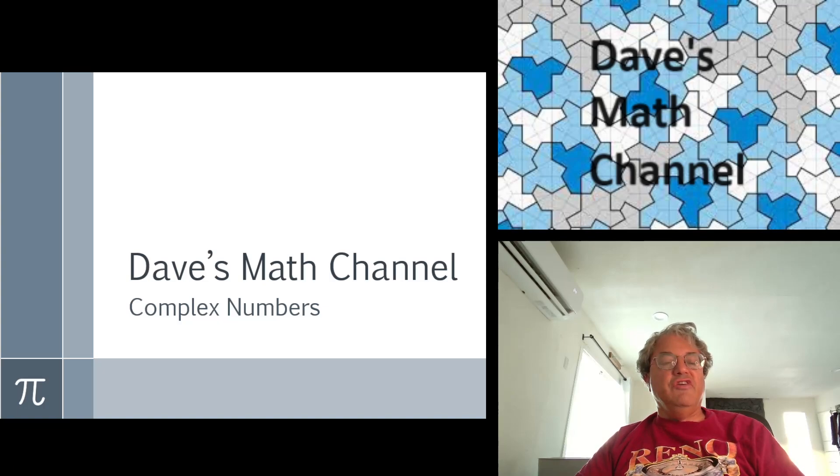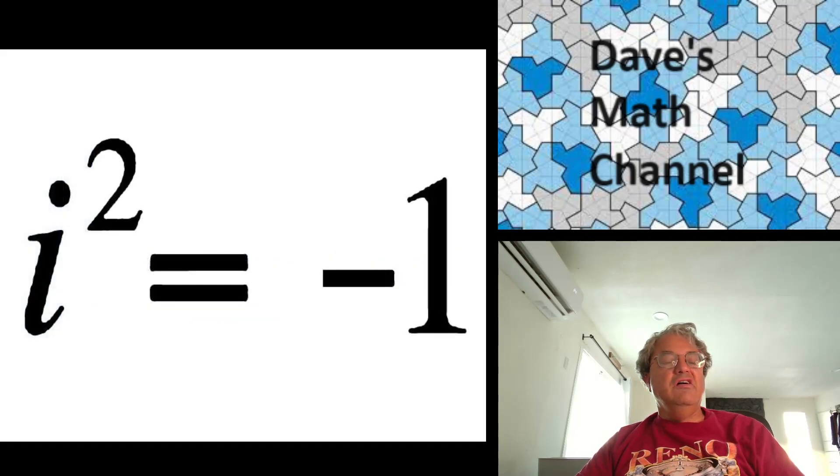And how do we define them? Well, we start with this number we call i. i is known as the imaginary unit, and this is the equation that defines i. We say i is the number whose square is equal to negative 1. That might seem a little strange to you, because we know that no real number can have a square that's negative. But we can just define a number called i. It's not a real number, and the square is minus 1. And let's just see what happens if we do that.